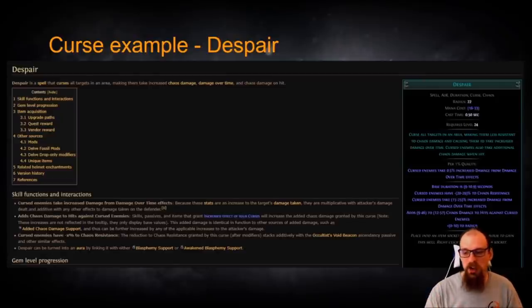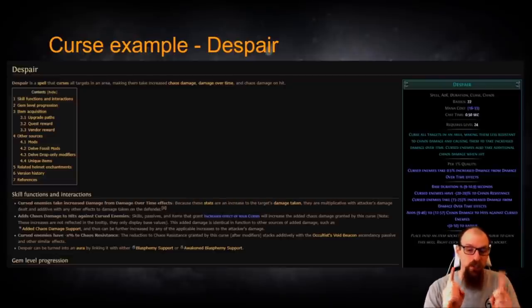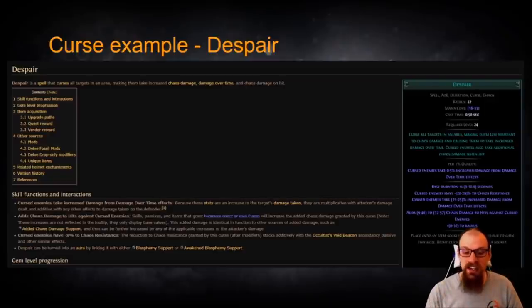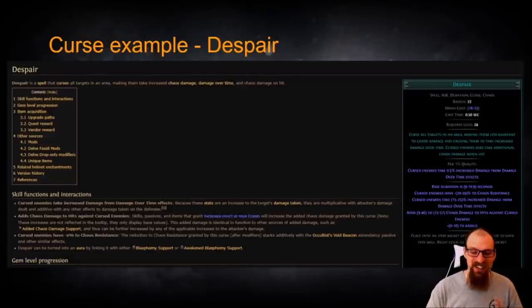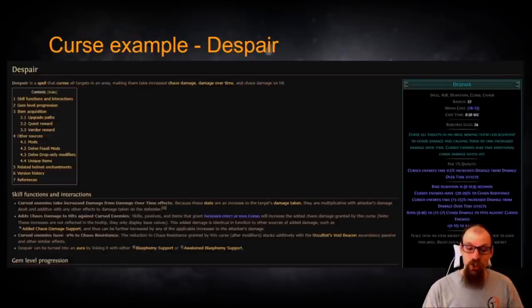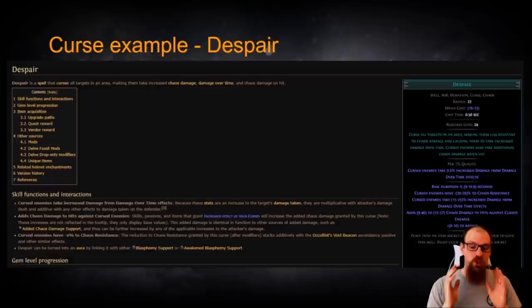On top of that it also adds flat Chaos damage to hits against the Cursed Enemies. There's one line that we particularly care about here for a build that is playing as an Occultist. Cursed Enemies have minus X to Chaos Resistance. The reduction to Chaos Resistance granted by this curse after modifiers stacks additively with the Occultist Void Beacon Ascendancy passive which grants us a whole bunch of negative resistances for Chaos Resistance to nearby enemies.